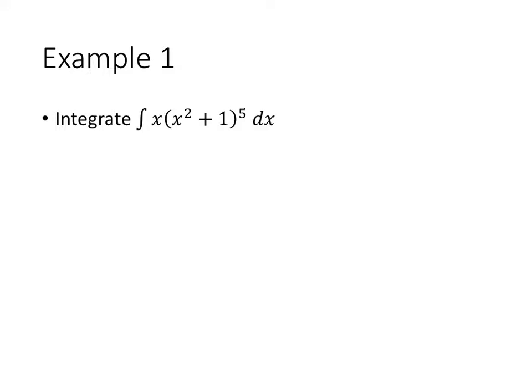Okay, let's do another example. So here we have the integral of x times x squared plus 1 to the 5th. We're going to use u equals x squared plus 1. And that means that my du is the derivative of x squared plus 1, which is 2x, times dx.